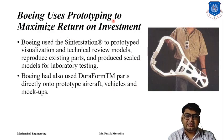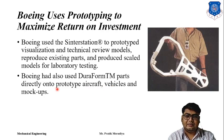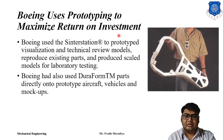Boeing used the SLS process for prototyping aircraft parts, using a material called Duraform — a durable polymer material for the SLS process. They used this polymer material to directly build prototype parts for aircraft, vehicles, and mockups, and tested those parts for proper functionality. The aerospace industry very widely uses different rapid prototyping techniques.